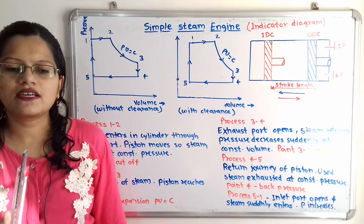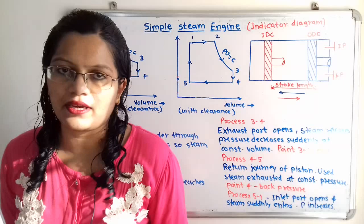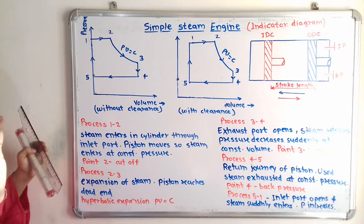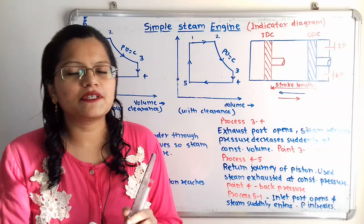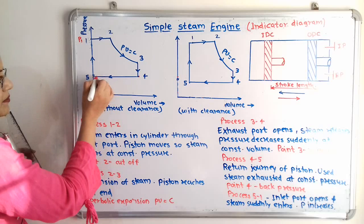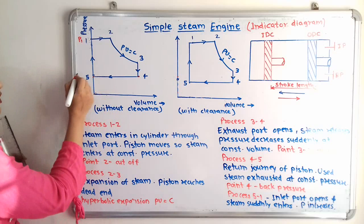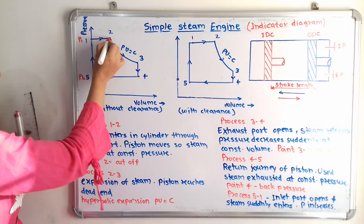Now we label pressures and volumes on the diagram. At points 1 and 2, pressure is constant: P1 equals P2, shown as P1. At points 4 and 5, pressure equals back pressure Pb — so P4 equals P5 equals Pb.